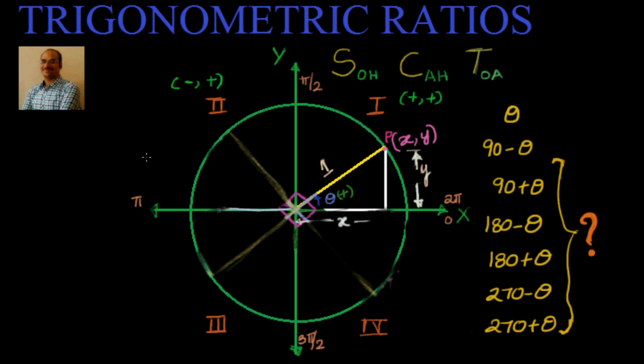Hi, welcome. In this video we will see what will happen to trigonometric ratios if the angle theta is replaced by trigonometric ratios of 90 minus theta, or 90 plus theta, or for that matter any relation with quadrant angles.